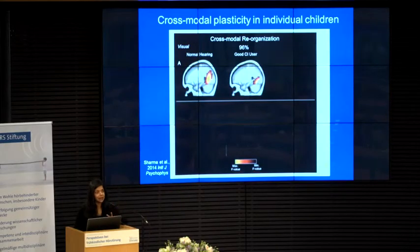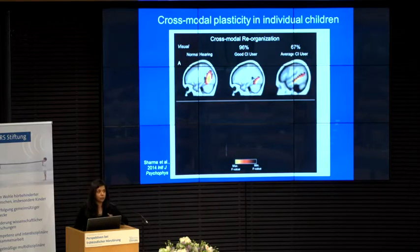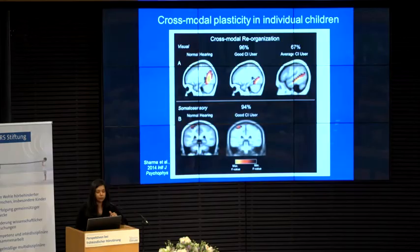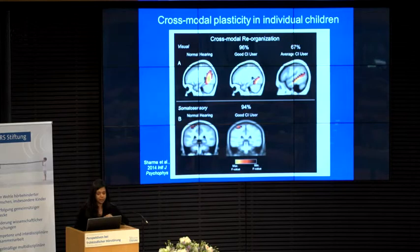Here's individual data. In a normal hearing child, visual stimuli produce activation of occipital areas. A good cochlear implant user getting 96% on speech perception shows very similar activation to normal. But a child not doing well with the cochlear implant, getting only 67%, shows additional activation of auditory cortical areas. Similarly with somatosensory stimulation: a good user with 94% on speech perception shows activation very similar to normal of post-central gyrus somatosensory cortex, but an average user getting only 76% on speech perception shows additional activation of auditory cortical areas.